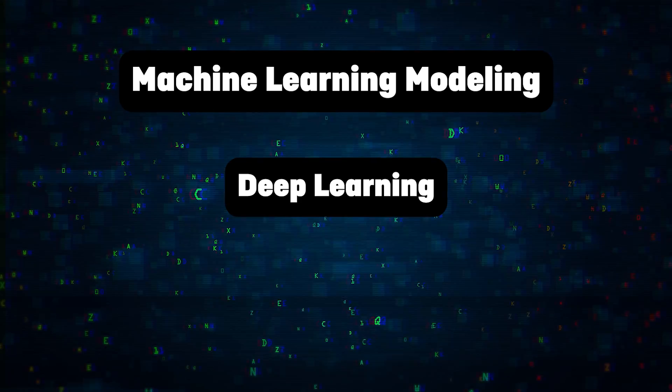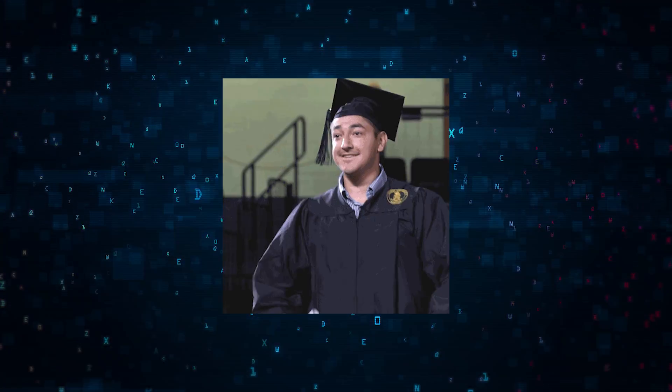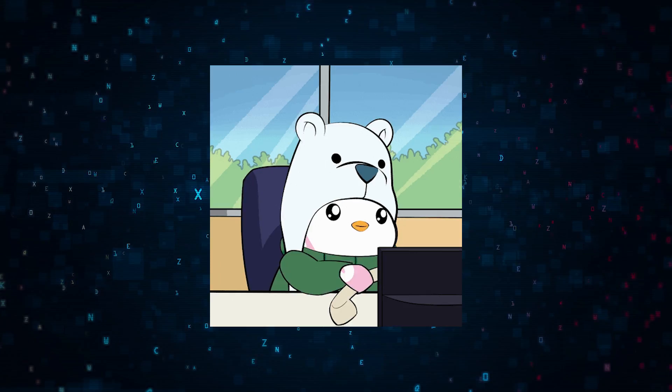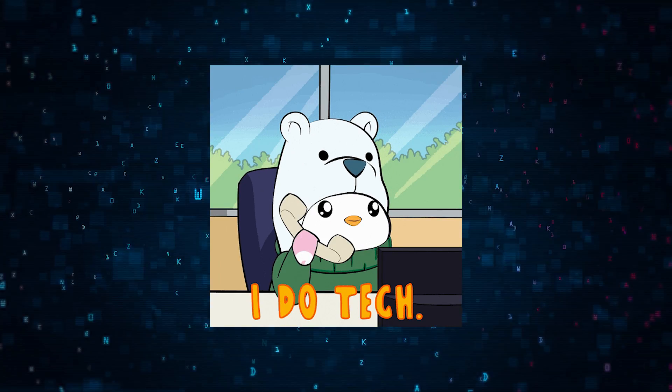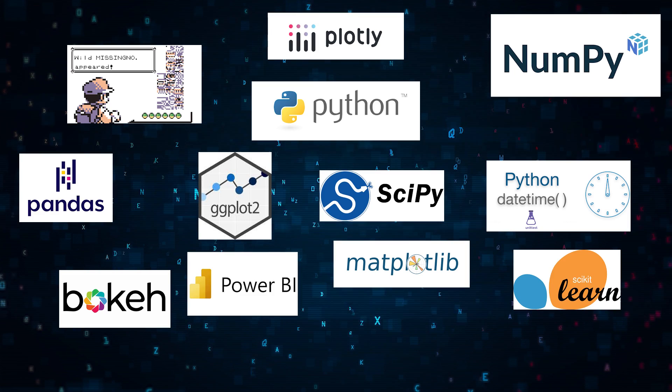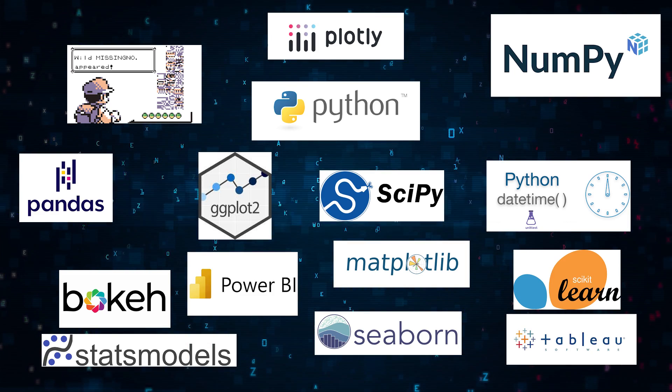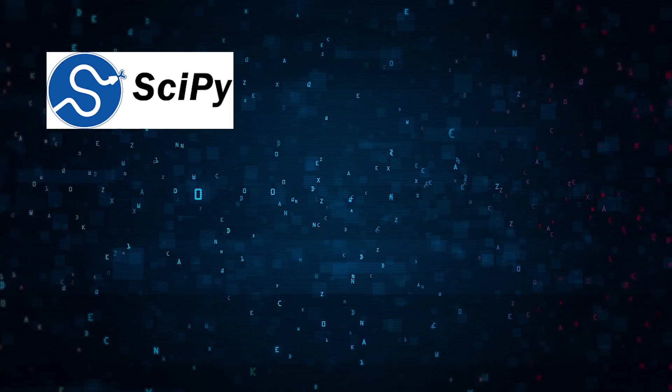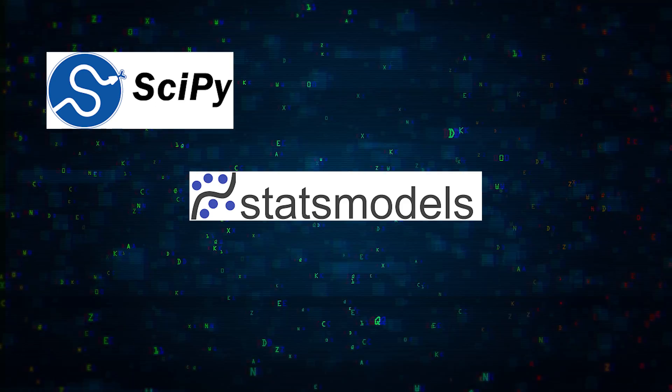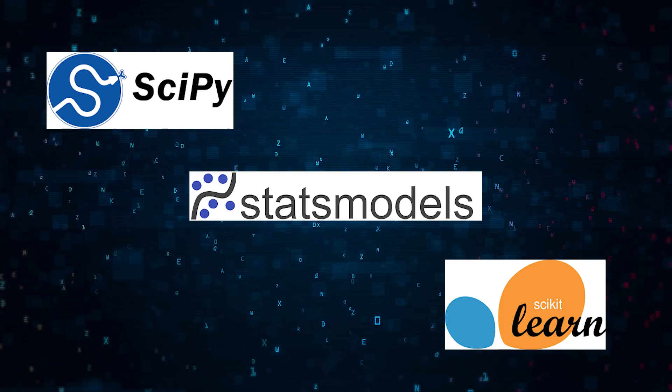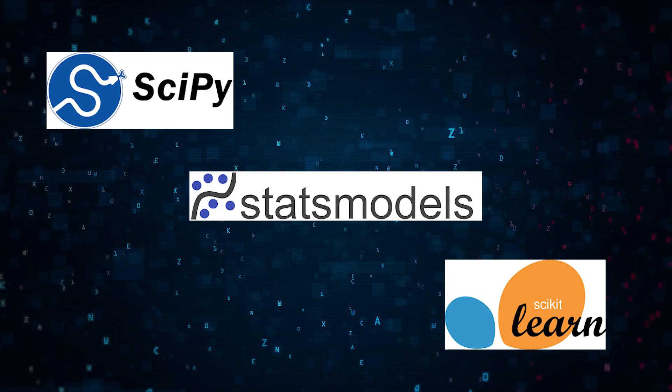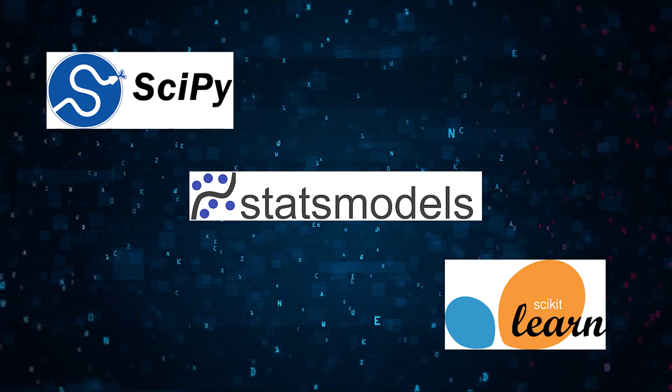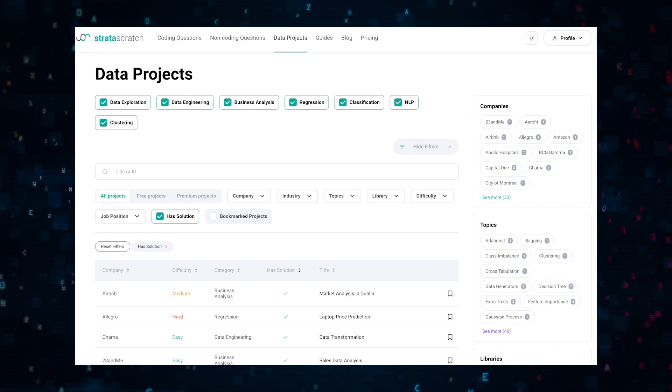That probably sounds like you need a PhD in math in order to be a data scientist. Well again, you don't need to know anything. You just need to know the right Python libraries to use. Machine learning is just like stats. You need to know how to use scipy, statsmodels, or scikit-learn in order to build your machine learning model. If you want some examples, check out the data project section on our Strata Scratch platform.